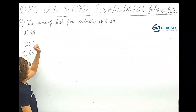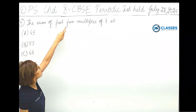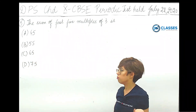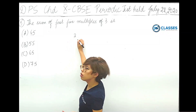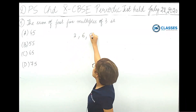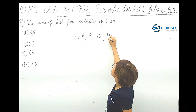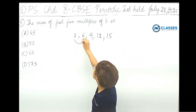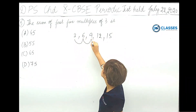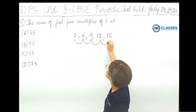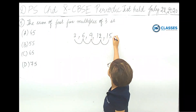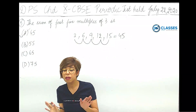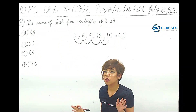The next question: sum of first 5 multiples of 3, which are 3, 6, 9, 12, 15. Adding them: 3 plus 6 is 9, plus 9 is 18, plus 12 is 30, plus 15 is 45. Alternatively using the AP sum formula: 5 by 2 into first plus last, which is 5 by 2 into 3 plus 15 equals 5 by 2 into 18 equals 45. Answer is option A.